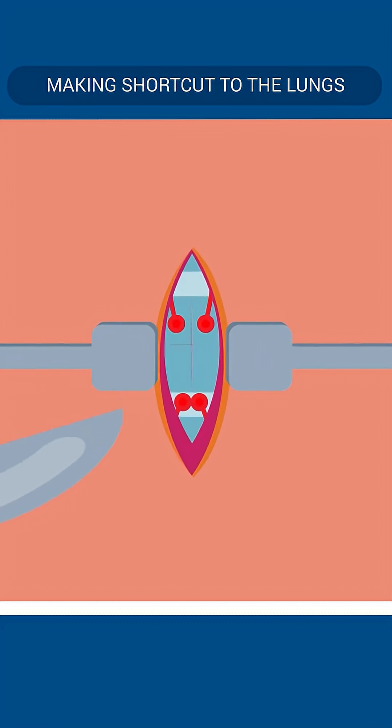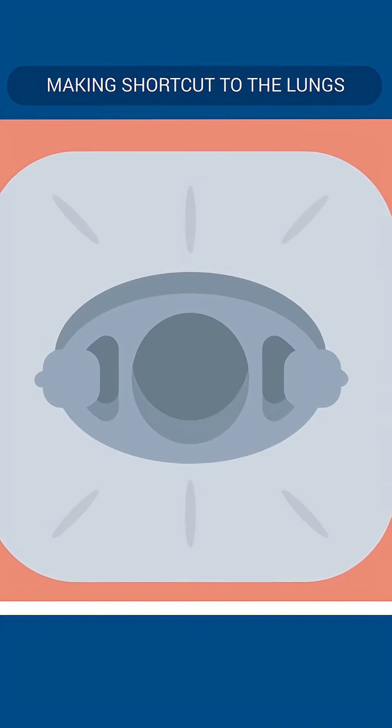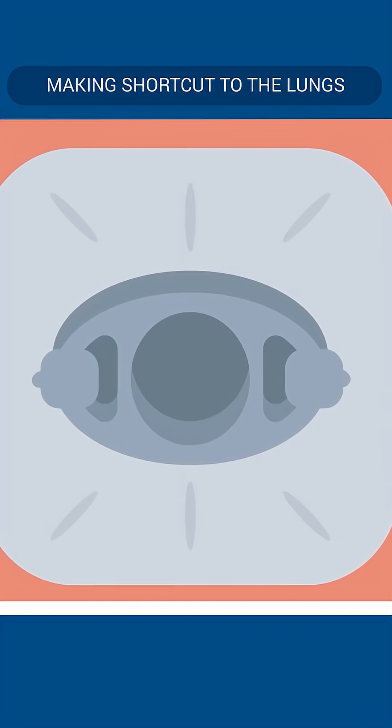Any blood vessels encountered along the way are ligated. An incision is given on the trachea, a hole is made, and the tracheostomy tube is inserted, preferably through the second or third tracheal ring.